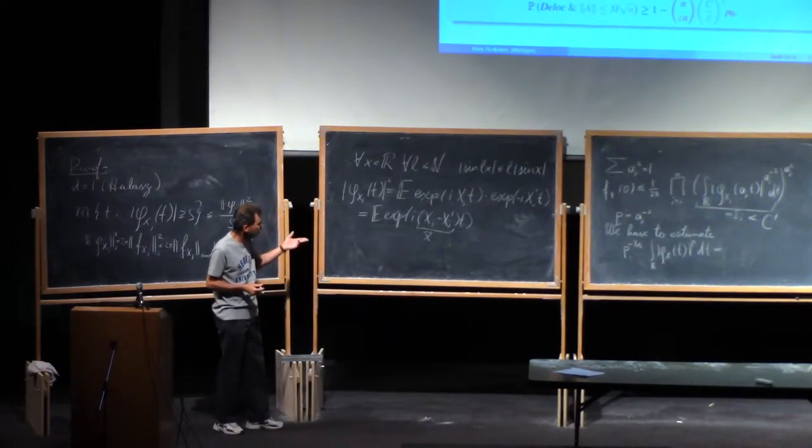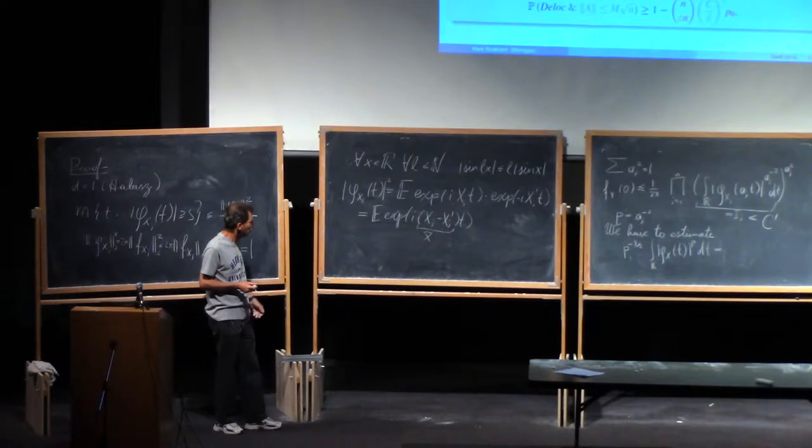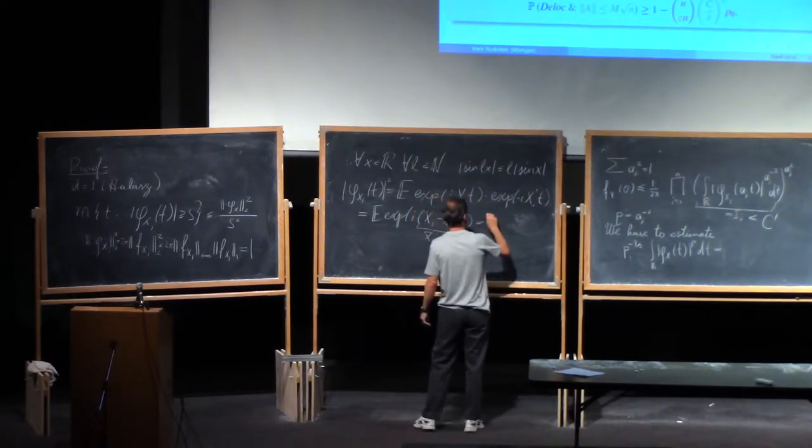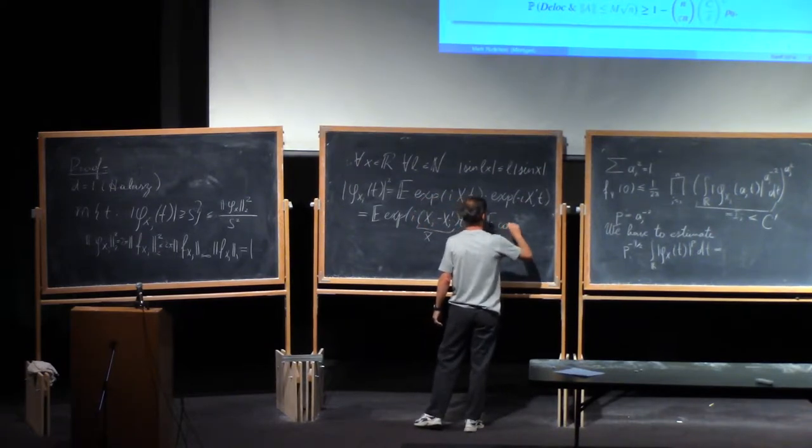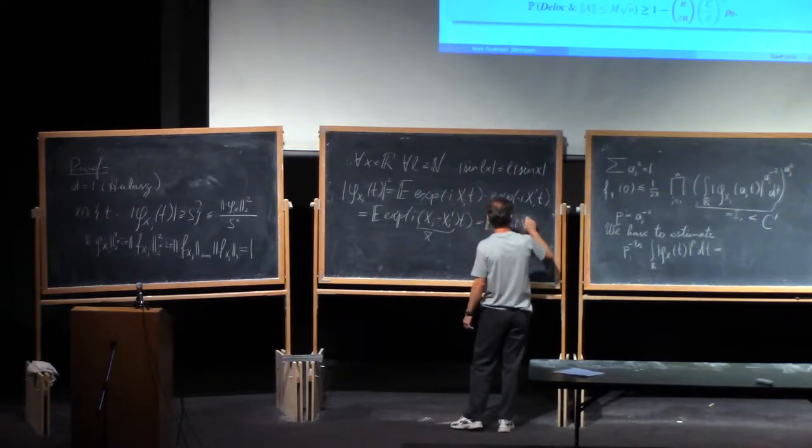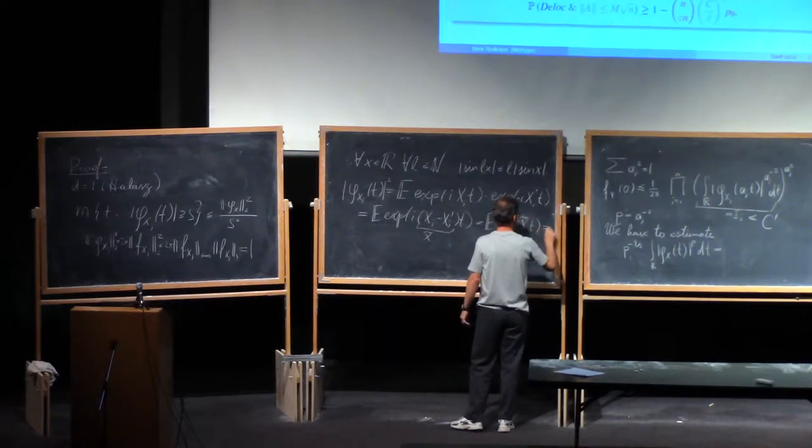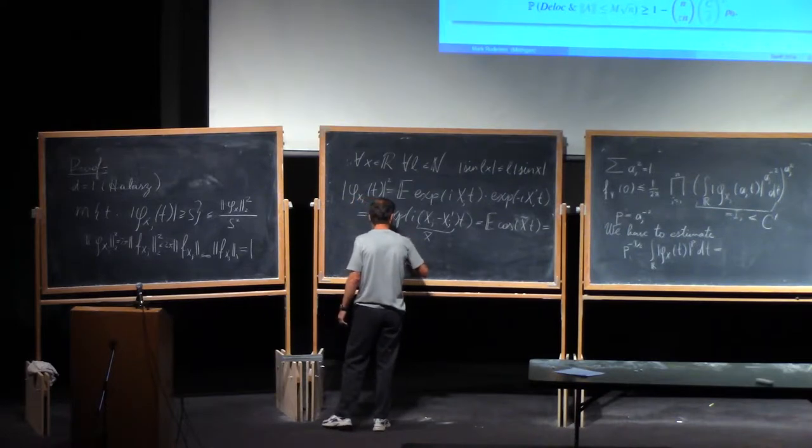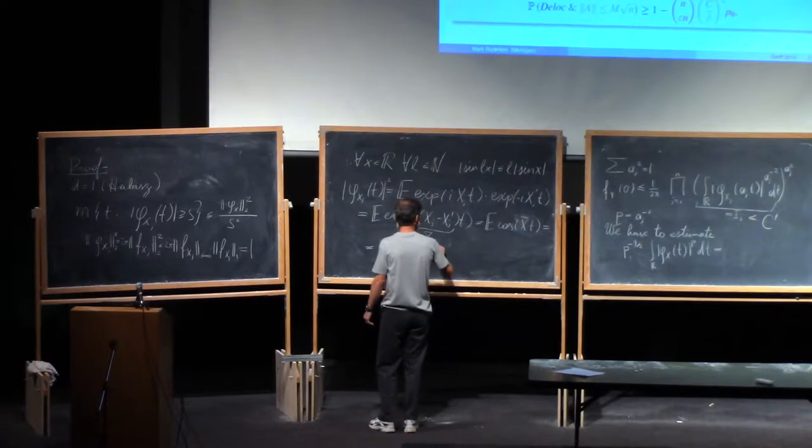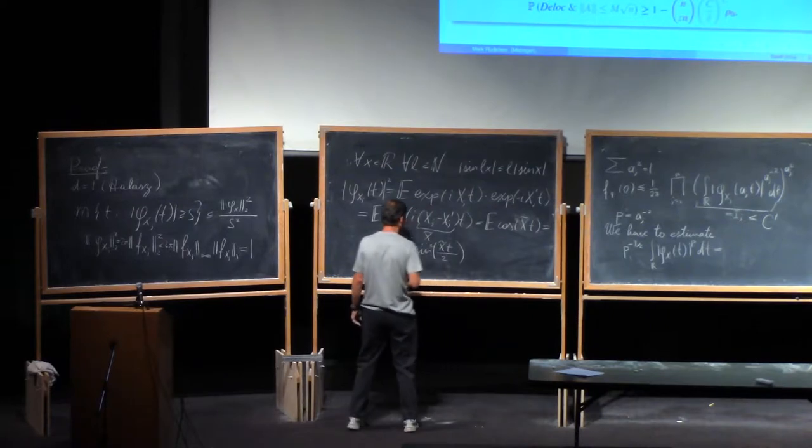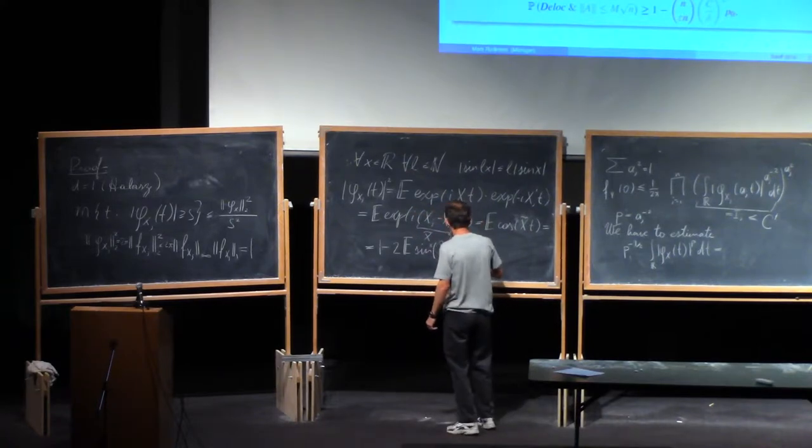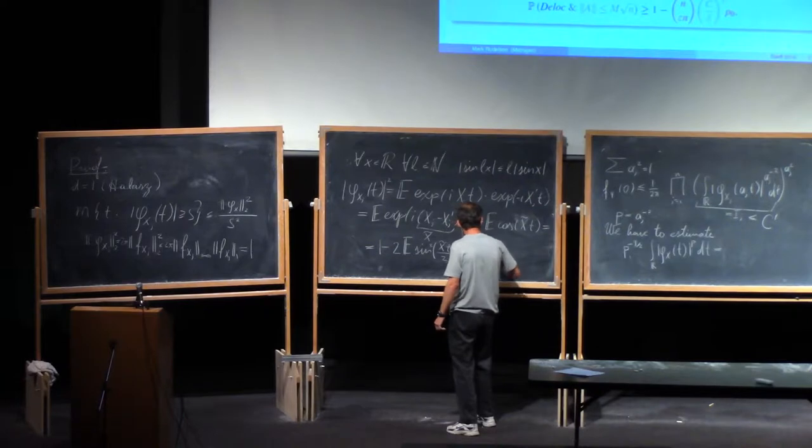And x tilde is a symmetric random variable, which is great because then I can pass to real calculations from complex. So this is the expectation of the cosine of x tilde t, or this is 1 minus twice expectation of sine x tilde t over 2 squared. And let me call the right-hand side 1 minus psi of t.